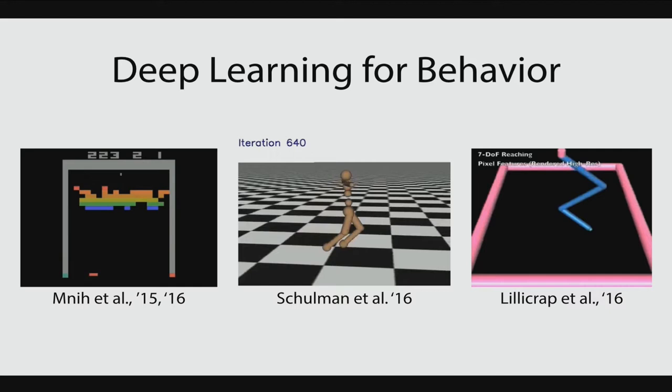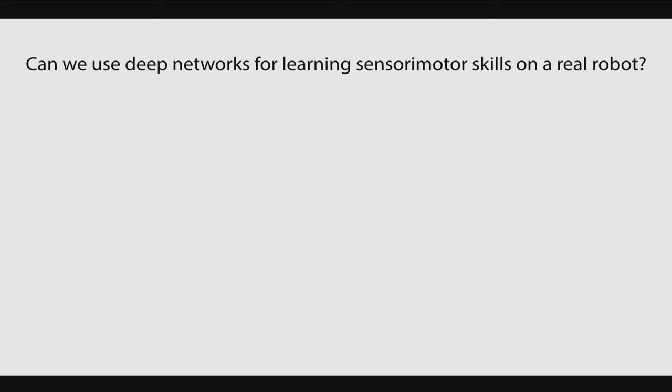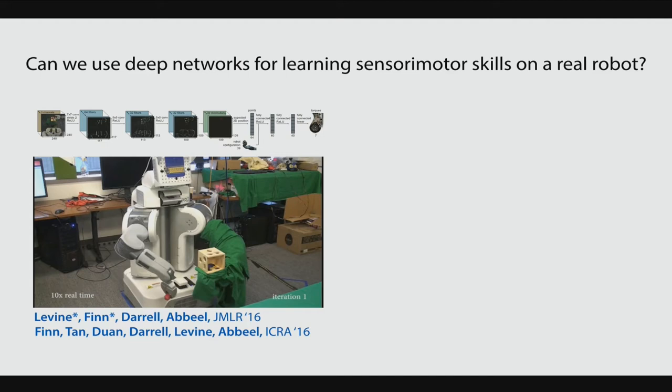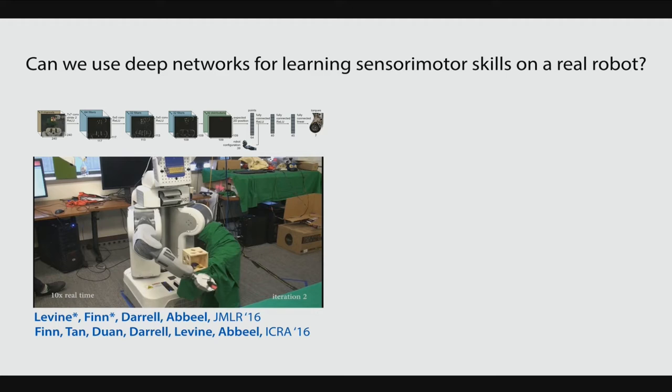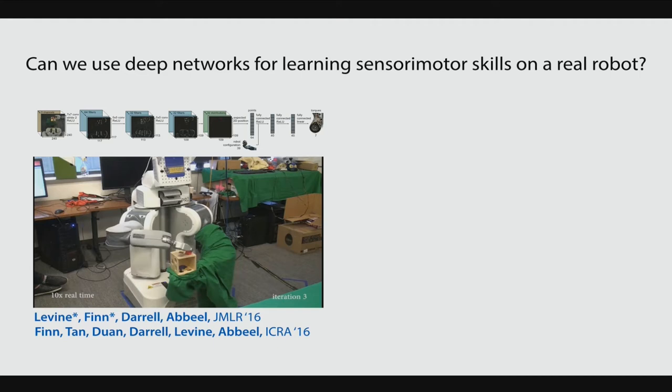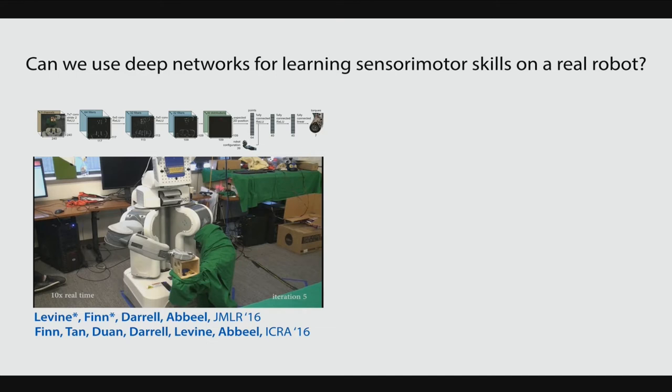The first question I set out to answer in my PhD is: can we use deep networks to learn sensory motor skills on a real robot? Here you can see the robot learning how to insert the red block into the shape sorting cube, learning from scratch. At the beginning it's just waving its arm around randomly, trying to learn how its actions affect the environment, and then over time improving its policy to eventually insert the block into the cube. The key was combining elements from optimal control with a novel convolutional neural network architecture that is much more efficient and suitable for robotic control.